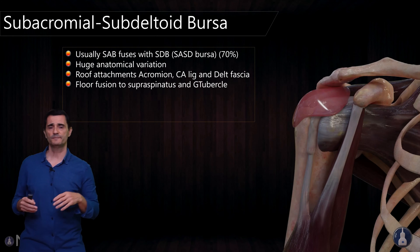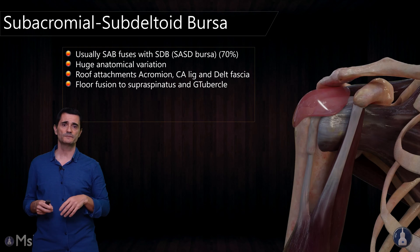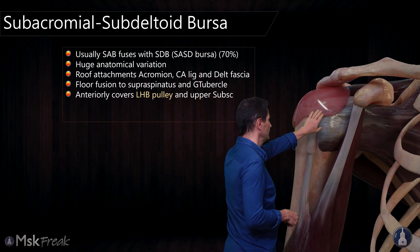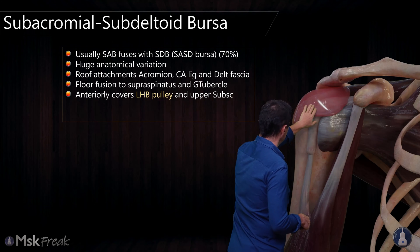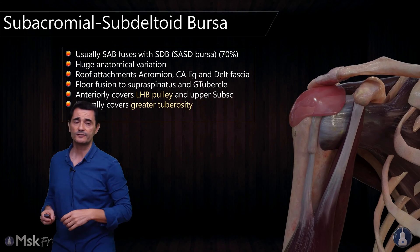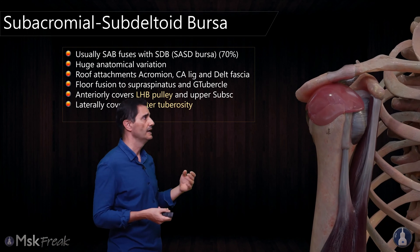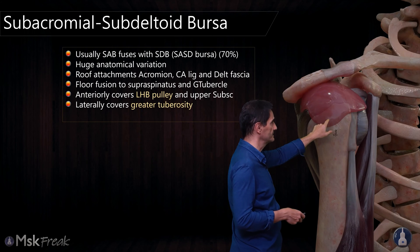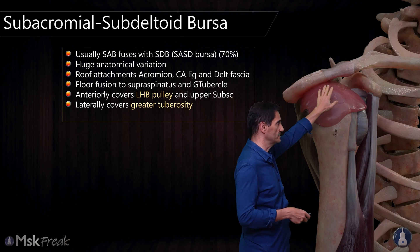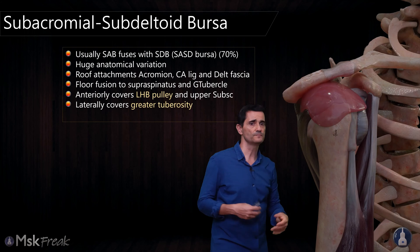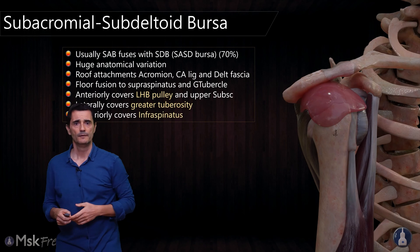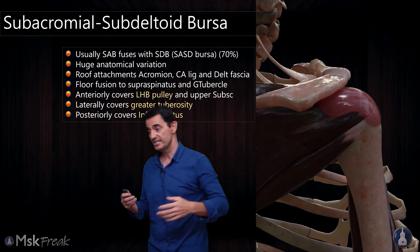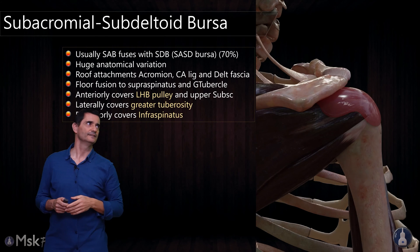The floor attachment will be at the supraspinatus and the greater tubercle. It covers anteriorly the long head of the biceps pulley and the upper subscapularis at this level. Laterally it covers the greater tuberosity and has a pouch here — important to know because sometimes you will find liquid at this place and not in the subacromial space, so always check this pouch when you suspect a bursa. Posteriorly, this bursa will cover the cranial part of the infraspinatus muscle. As you can see, a huge bursa covering all the subacromial space.